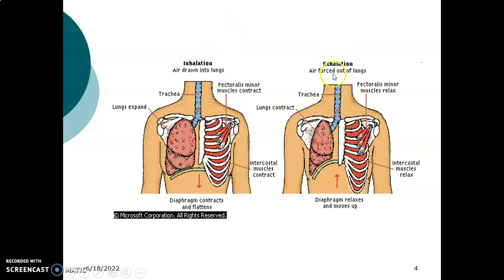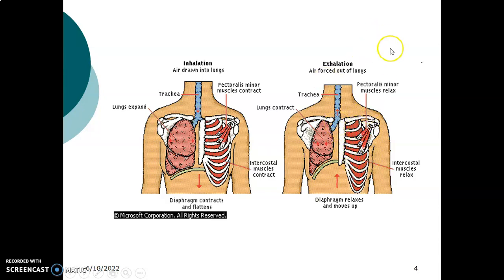During exhalation, the diaphragm relaxes and forms the dome, moving upwards. The ribs move back inwards and downwards. The intercostal muscles and pectoralis minor all relax, causing the ribs to move back downwards and inwards. So the volume in the thoracic cage reduces. The pressure in the thoracic cage now becomes higher than the pressure outside, forcing air outside the lungs.